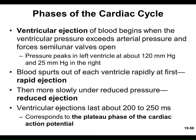In ventricular ejection, the pressure builds until it exceeds the resistance of the semilunar valves, pushing them open and blood spurts out — fast at first, then more slowly. This ejection lasts about 200 to 250 milliseconds, corresponding to the plateau seen on the cardiac muscle action potential. We don't want the heart to twitch like skeletal muscle — we want it to squeeze and sustain that squeeze.